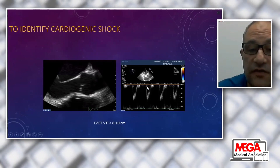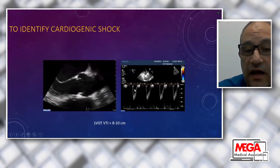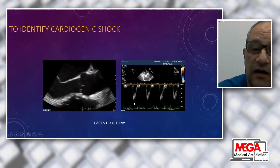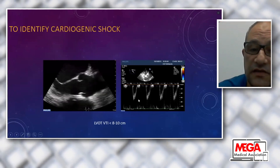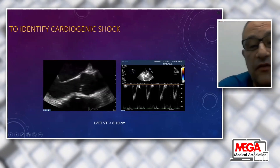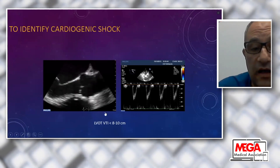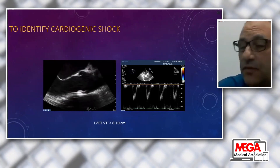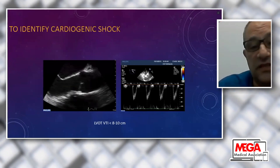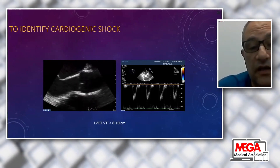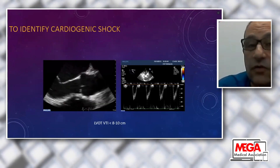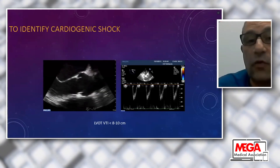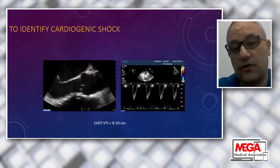I apply Doppler across the left ventricular outflow tract and obtain a Doppler flow curve. I trace this curve to get the velocity time integral. A VTI less than 10 cm means the average distance a blood cell is ejected during one cardiac cycle is critically low—this denotes a failing left ventricle and requires urgent mechanical circulatory support.